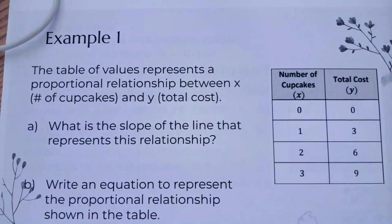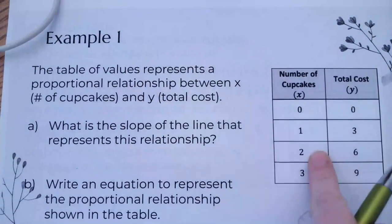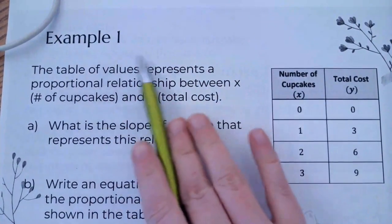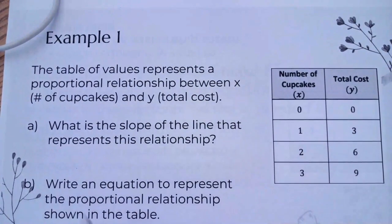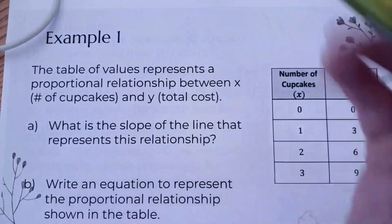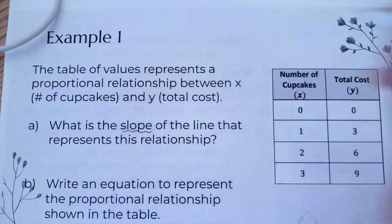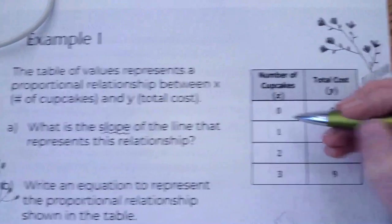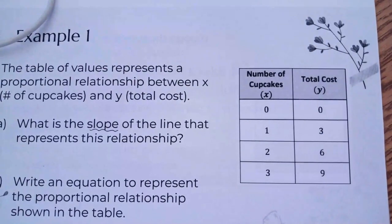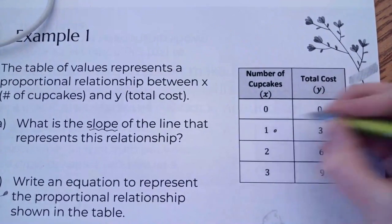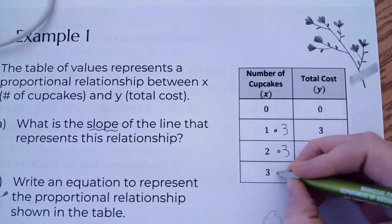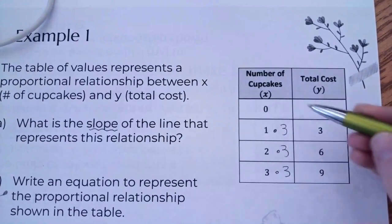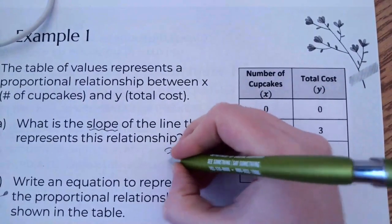Next is example one. We're going to look at this table. The table of values represents a proportional relationship between x, number of cupcakes, and y, the total cost. What is the slope of the line that represents this relationship? The slope is what we're multiplying by to get to our number. One times what number is 3? That's times 3. Two times 3 is 6, and 3 times 3 is 9, so our slope here is 3.